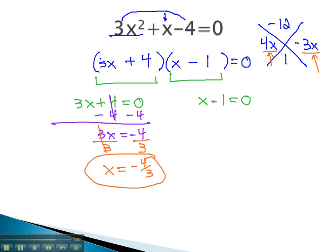To find our other possible answer for x, we solve the other equation by adding 1 to both sides to get x equals 1. If x is either 1 or negative 4 thirds, the original equation, when worked out, will equal 0.